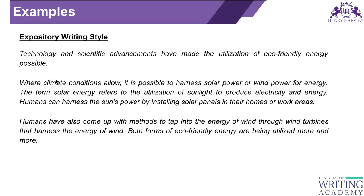Now here are examples of each style. Expository style is where you try to inform or educate your readers — you talk about everything on a particular topic. For example: 'Technology and scientific advancements have made the utilization of eco-friendly energy possible. Their climate conditions allow it is possible to harness solar power or wind power for energy. The term solar energy refers to the utilization of sunlight to produce electricity.' Here you are getting informed about renewable forms of energy.